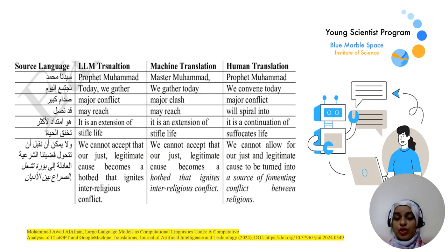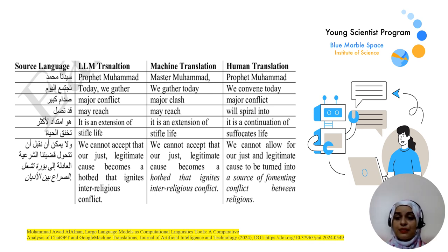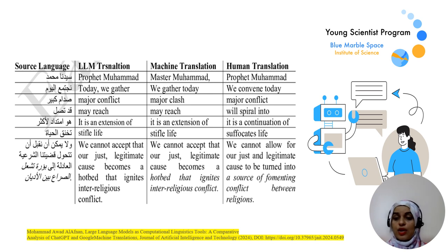As the table shows here, from the 2024 article published in the Journal of Artificial Intelligence and Technology, the article compares ChatGPT and Google Translate focusing on their translation quality, especially between Arabic and English. It highlights differences in accuracy, handling of cultural nuances, and the preservation of context in translations, showing where each model excels or falls short. The study also emphasizes the importance of accurate and culturally sensitive translations in multilingual communication.